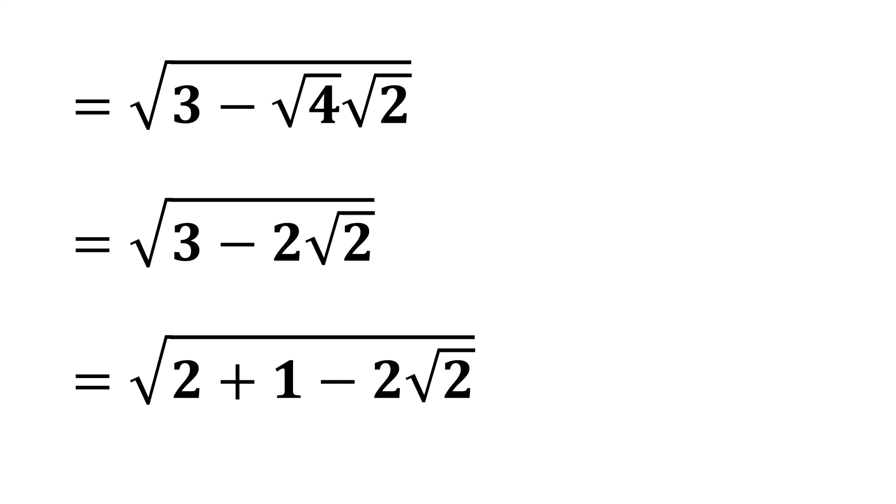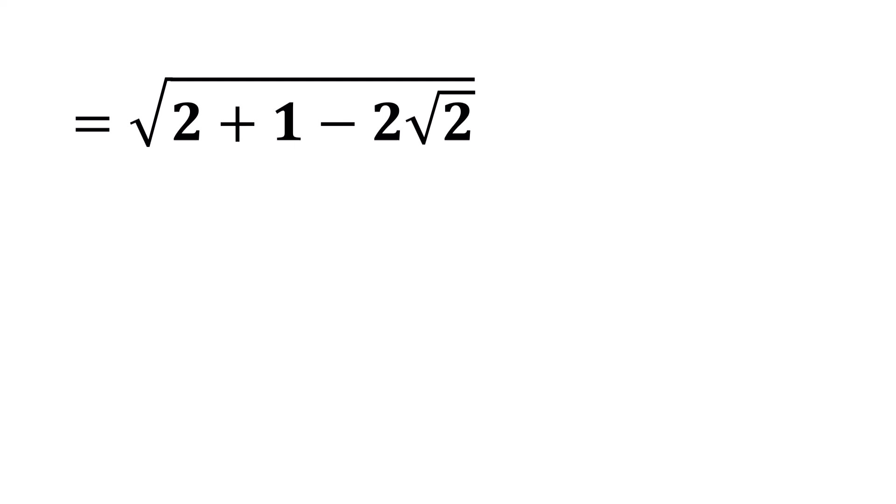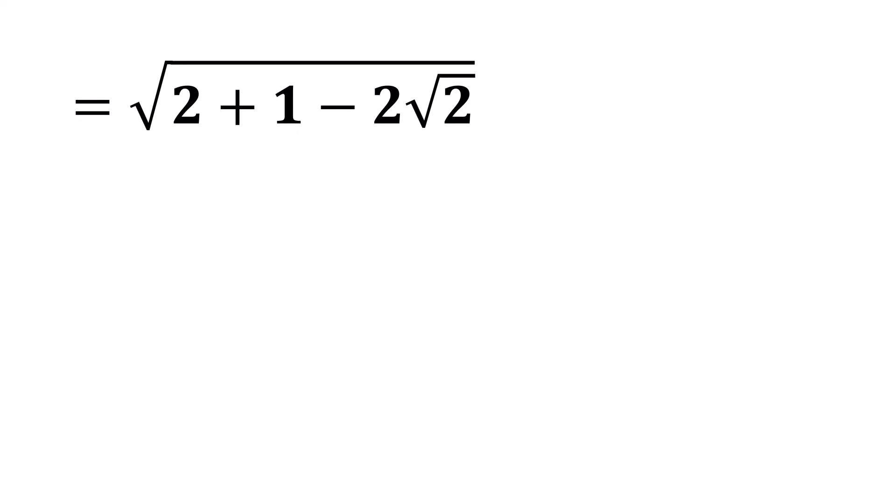Now, by rearranging the terms inside, we can write it as the square root of 2 minus 2 times the square root of 2 plus 1.